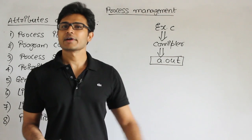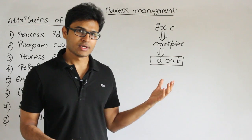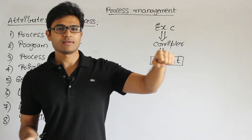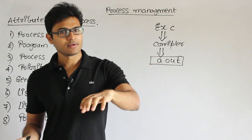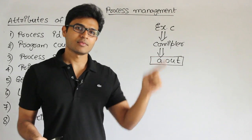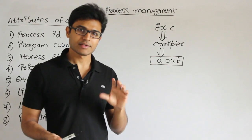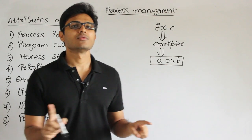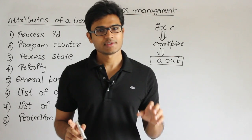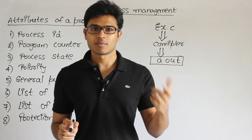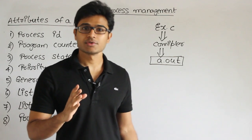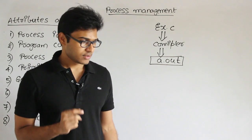This program will generally reside in the secondary memory and is not yet executed. The operating system will take that program and put it in the main memory and then start executing it. When it puts it in the main memory, it will create some kind of data structure. That data structure is what we call a process — the process is something which is created by the operating system in order to execute a program.